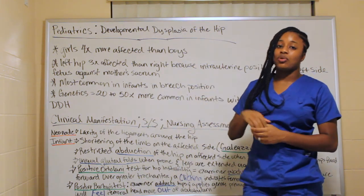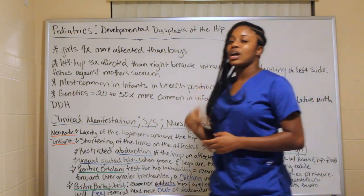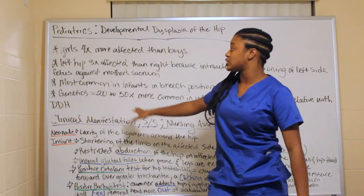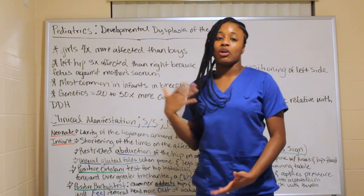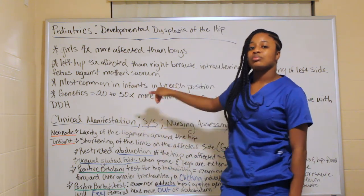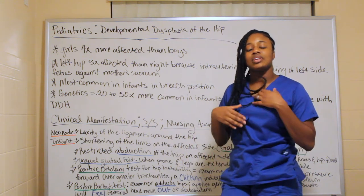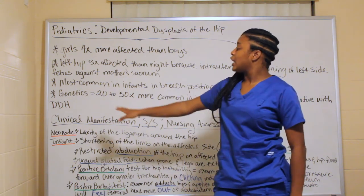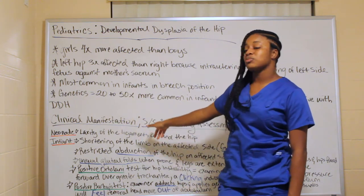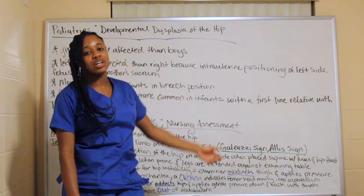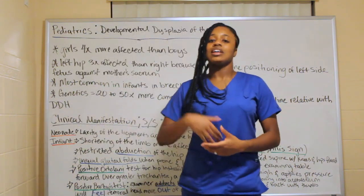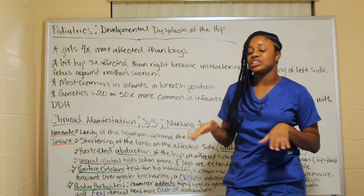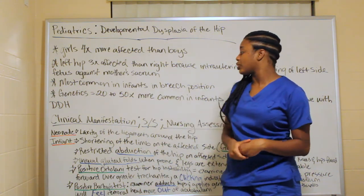Girls are four times more affected than boys. The left hip is three times more affected than the right due to intrauterine positioning — the fetus is positioned more against the mother's sacrum on that side. It is more common in infants in breech position, where the feet face downward instead of the head. Genetically, it is 20 to 50 times more common in infants with a first-line relative who has hip dysplasia.